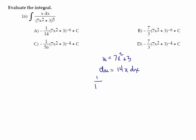But we only want the x dx, so we divide both sides by 14, and we're ready to swap out the numerator now as 1/14 du over u to the fifth power.